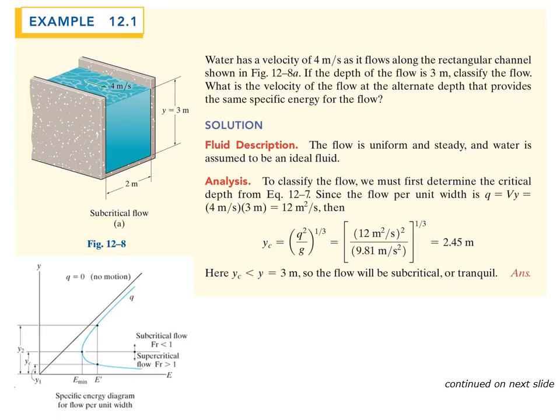Let's take a look at Example 12.1. Water has a velocity of 4 meters per second as it flows along a rectangular channel. If the depth of the flow is 3 meters, classify the flow and find the velocity at the alternate depth that provides the same specific energy. The first thing we need to do is calculate small q, the flow rate per unit width. In this example we are given the velocity and the depth, so q equals velocity times depth, giving q equals 12 square meters per second.